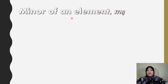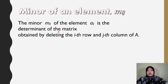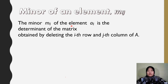How to calculate the minor of an element M_ij? The minor M_ij of the element A_ij is the determinant of the matrix obtained by deleting the i-th row and j-th column of matrix A.